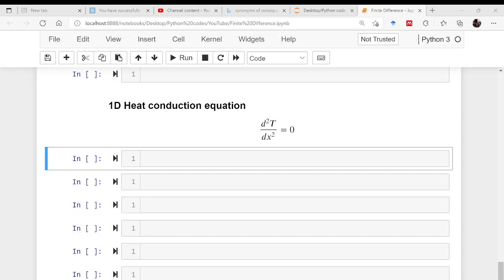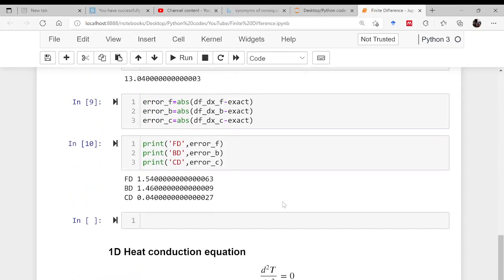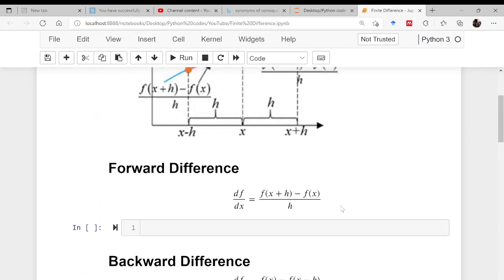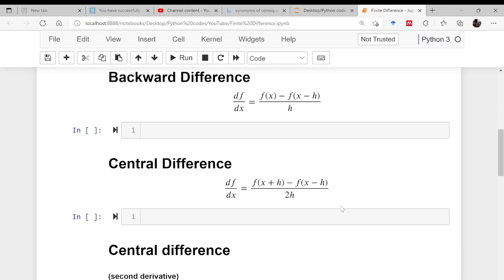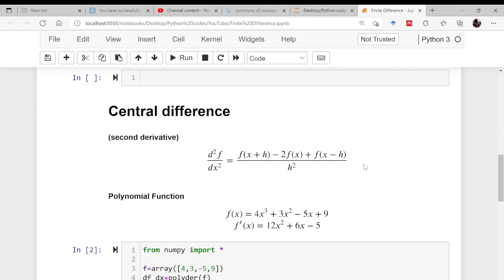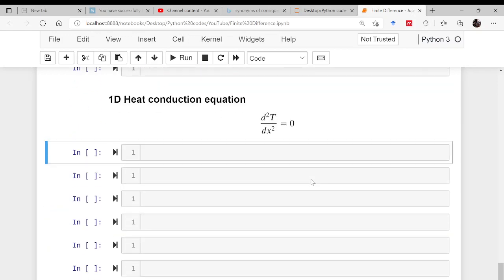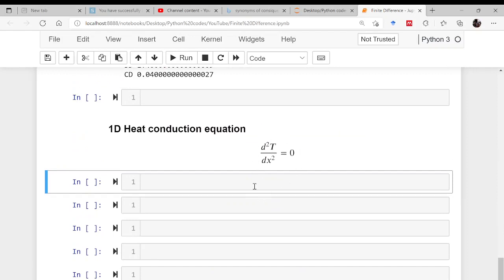If you look at this particular equation, d²T/dx², this is a one-dimensional heat conduction equation. Now we want to solve this. What we will be doing is we will be using finite difference to solve this particular equation. In the last lecture, we have already seen how to use finite difference for the evaluation of the slope at any particular point.